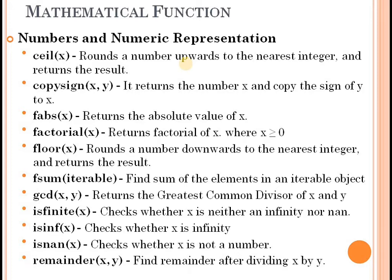copysign(x, y) returns the number x with the sign copied from y. The second number y provides the sign — positive or negative — and x is returned with that sign. fabs(x) displays the absolute value. factorial(x) displays the factorial of x. fsum computes the sum, and gcd is the greatest common divisor.